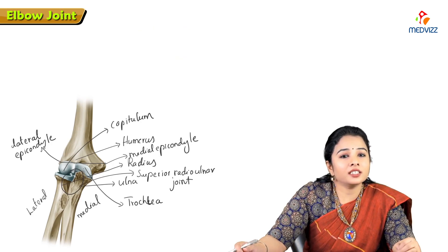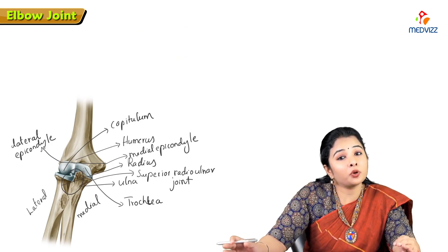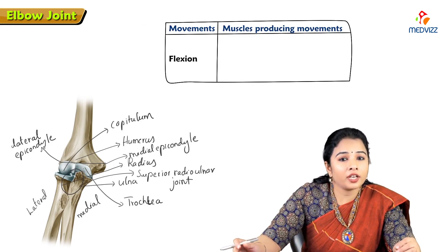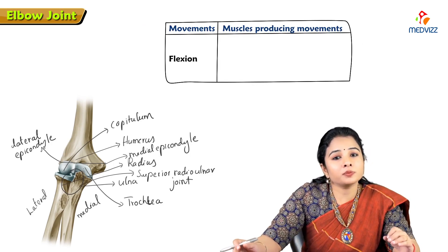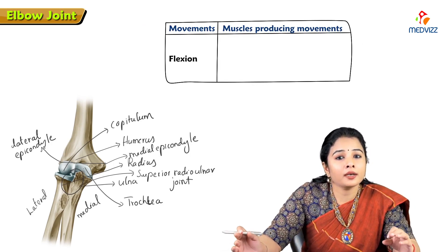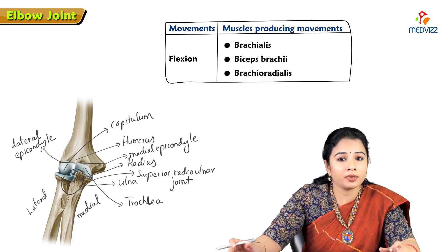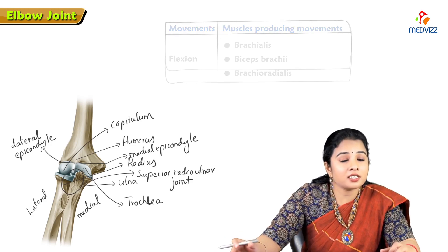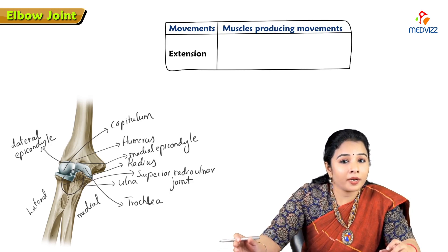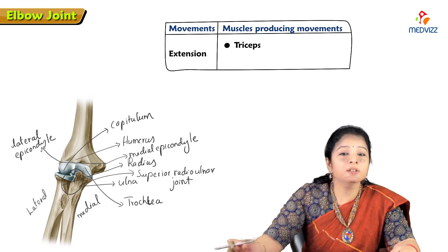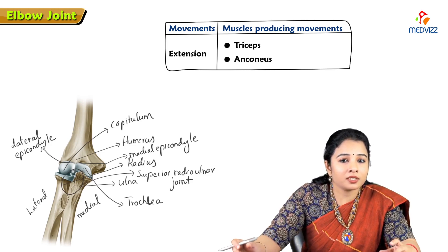The movements and muscles producing them at the elbow joint are as follows. Flexion is brought about by the brachialis, biceps brachii, and brachioradialis muscles. Extension is produced primarily by the triceps muscle, with anconeus as an accessory extensor.